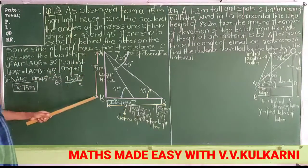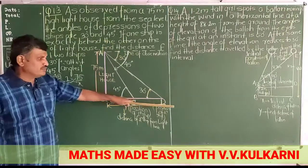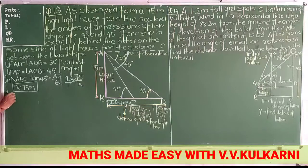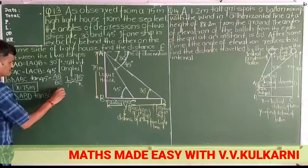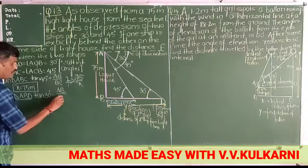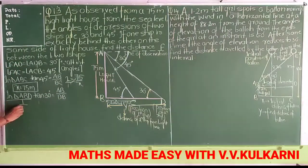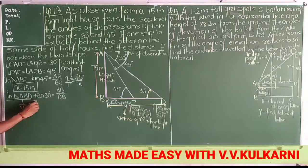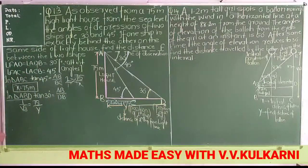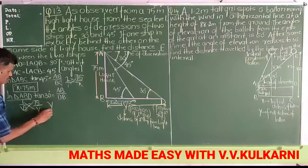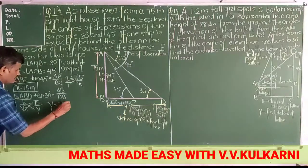Next, in right angle triangle ABD, we will take tan 30 degree equal to AB by BD. Tan 30 ki value hai 1 by root 3, aur AB ki value aap jaante ho 75 hai, aur BD ki value humne le rakha hai y. If I cross multiply, what I get is y is equal to 75 root 3 meters.